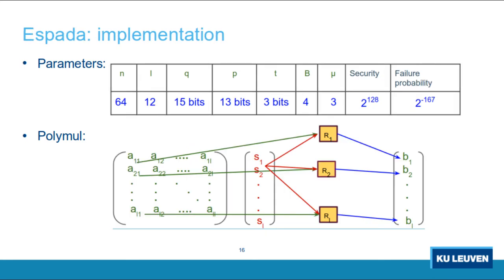In Espada, the ciphertext polynomial length is 64 and message length is 256 bits, so one ciphertext coefficient encodes 4 message bits, giving B = 4. Parameters: N = 64, vector dimension L = 12, Q = 15 bits, P = 13 bits, T = 3 bits, and μ = 3 for the centered binomial distribution. This achieves 128-bit security with failure probability 2^{−167}. Matrix-vector multiplication is the most time-consuming operation. Since this is a module LWR scheme, parallel computation reduces computation time, and the 64×64 polynomial multiplication is very fast in hardware. Using L parallel processors R1 through RL for the L polynomial multiplications makes the scheme efficient.